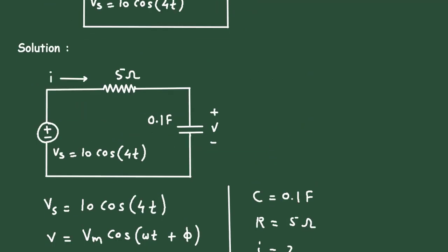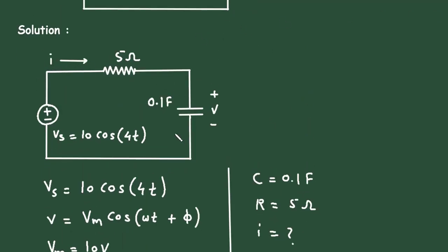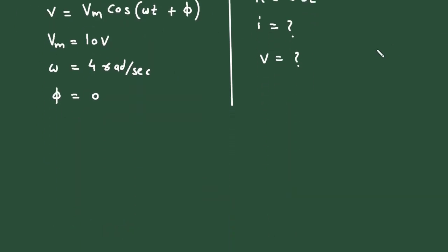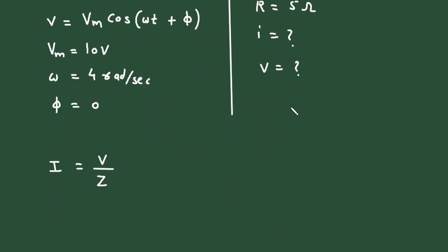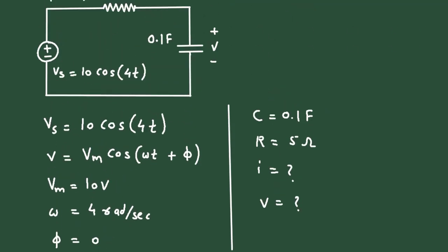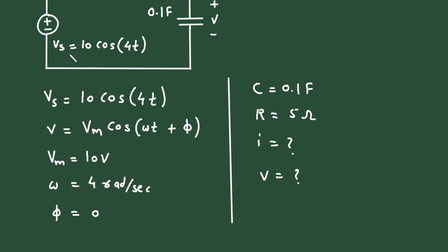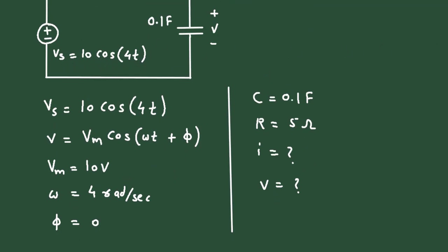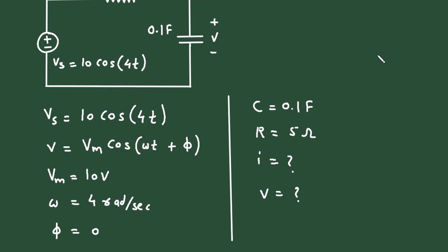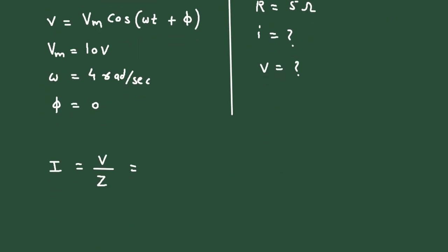To find current I, according to Ohm's law for an AC circuit, I = V / Z. The voltage is given in time domain format. If we convert this time domain to frequency domain, it will be 10 at an angle of 0 degrees, divided by impedance Z.